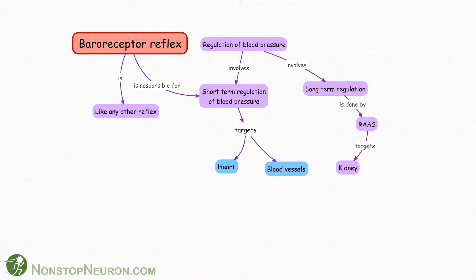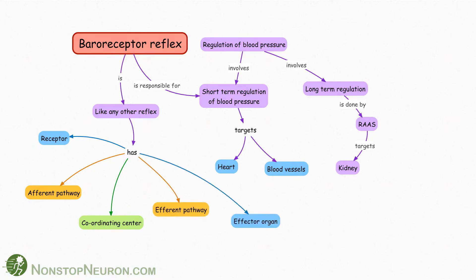Baroreceptor reflex is just like any other reflex and it has receptors, afferent pathway, coordinating centers, efferent pathway and effector organs.